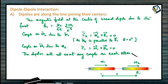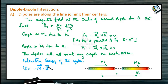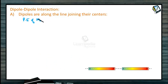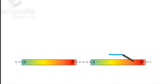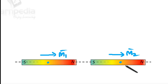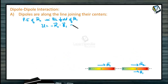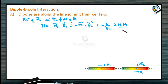Let us see about the interaction energy of the system. Interaction energy U = magnetic moment dot magnetic field vector. Potential energy of M2 in the field of M1, or M1 in the field of M2, can be written as U = minus M2 dot B1, which is also equal to minus M1 vector dot B2. It equals minus mu naught by 4 pi times 2M1 M2 divided by R cubed.